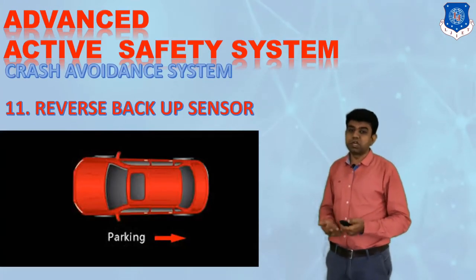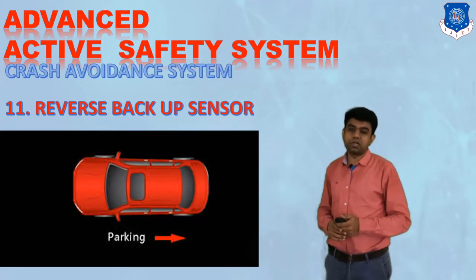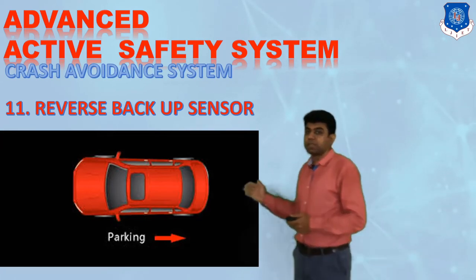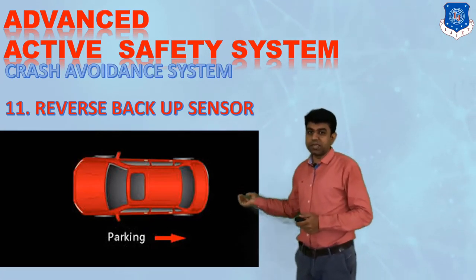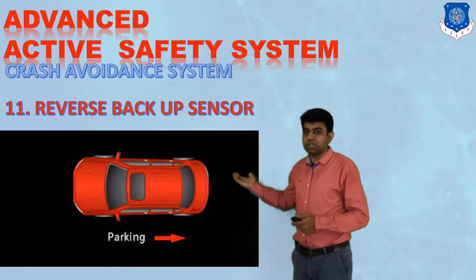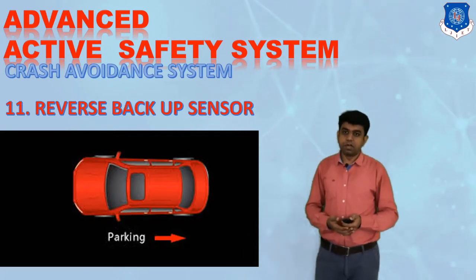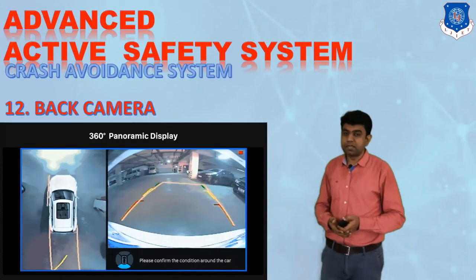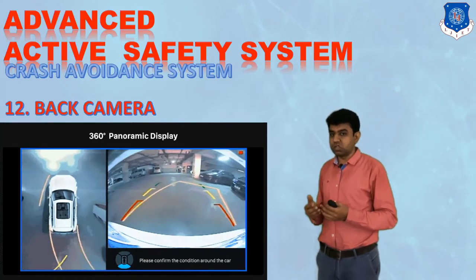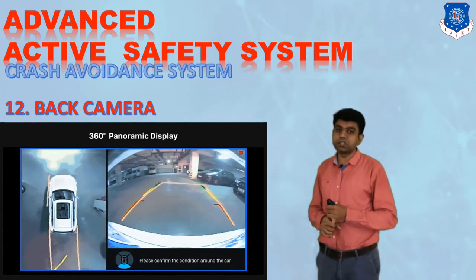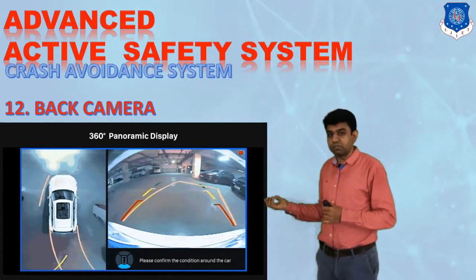The eleventh system is the reverse backup sensor, which is now mandatory in most cars. Proximity sensors are standard — they raise an alarm when you are reversing. The twelfth system is the back camera, which is more accurate than parking sensors because you can physically view the object when taking a reverse turn, rather than just hearing an alarm.